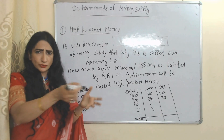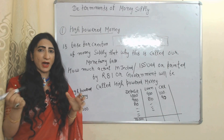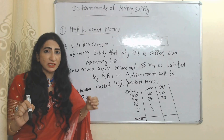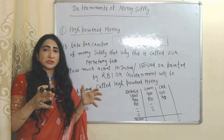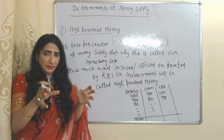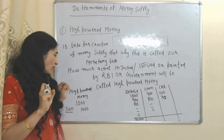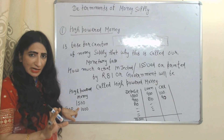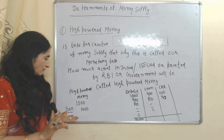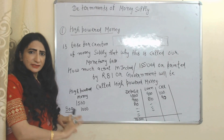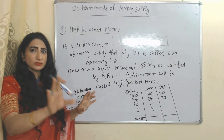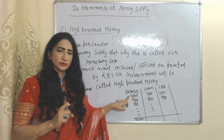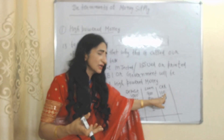Some part of high-powered money goes to the public and some part goes to banks. The public does not have the power to make money from money through the process of credit creation, but banks do. Suppose high-powered money is 1,500 rupees — the total amount printed by RBI. Suppose 500 goes to the public; this amount remains as-is since the public cannot create money.